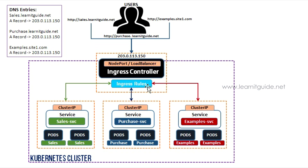What is Kubernetes Ingress? In Kubernetes, resources are all available — like Services, Deployment, Secrets, ConfigMap. Kubernetes Ingress is also a Kubernetes resource. Because of our applications, we will access them through the Ingress.